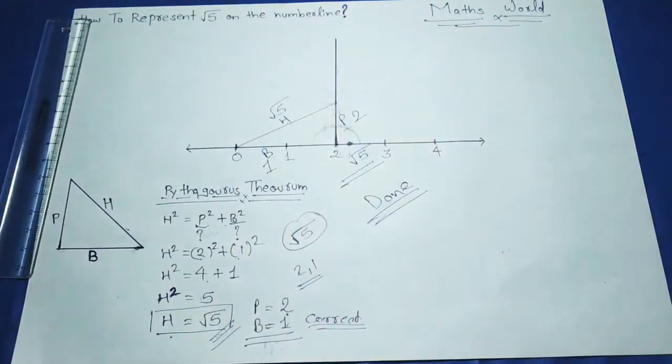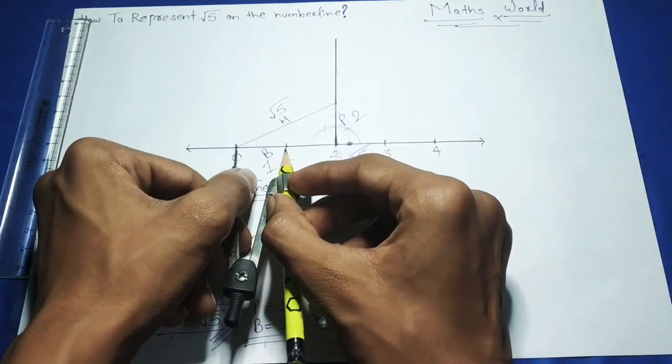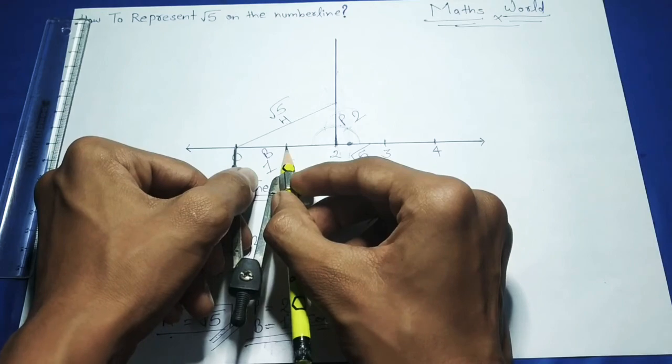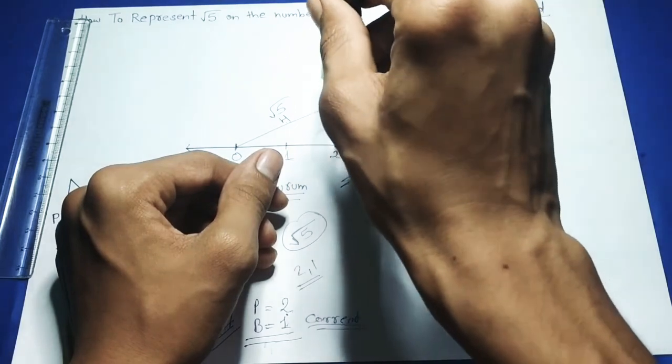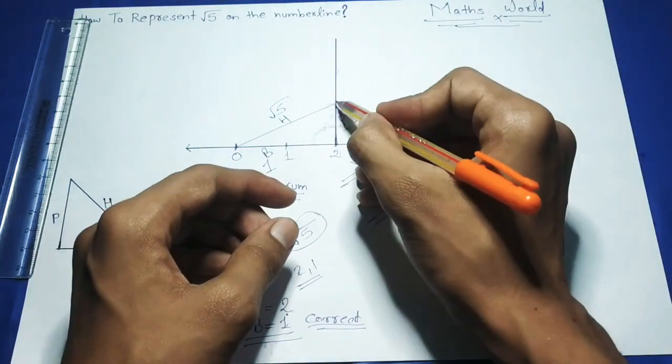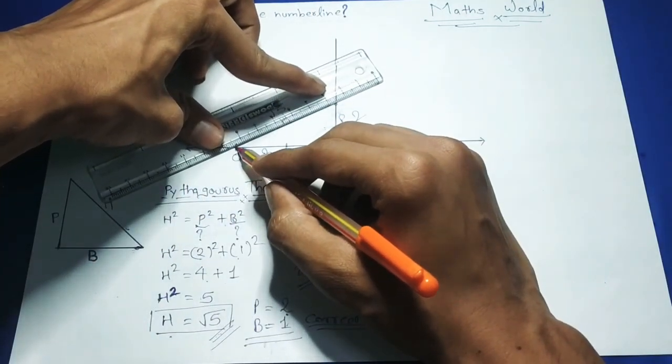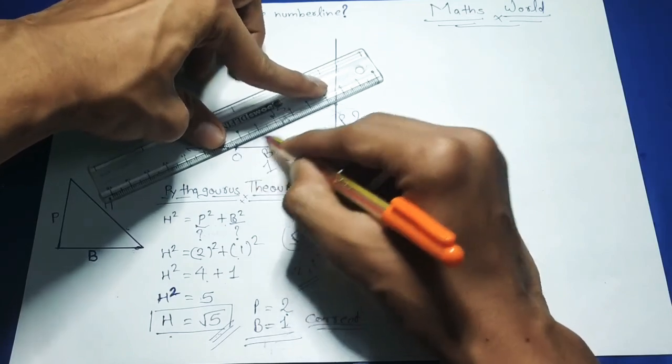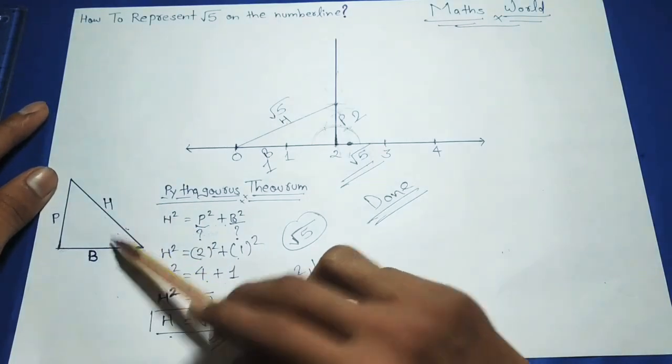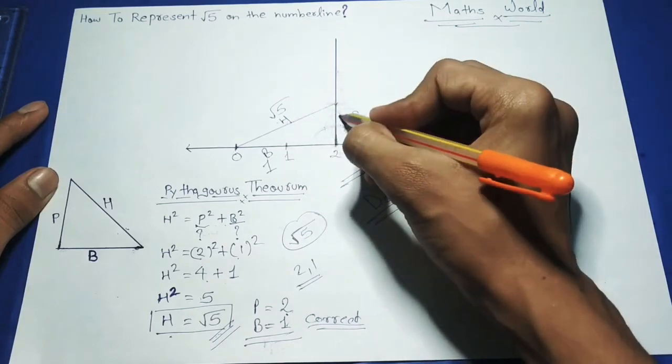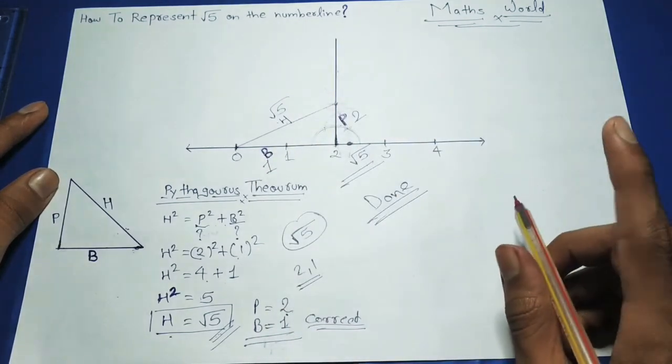Then again we have to use the compass and measure the gap on the number line. We point at 2 and draw a cut. This is the right angle triangle which has H, P, and B as I have shown here.